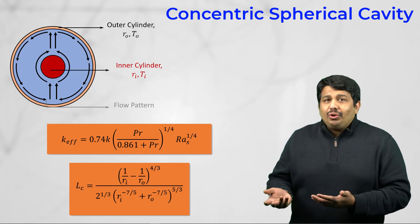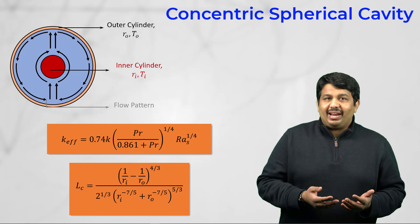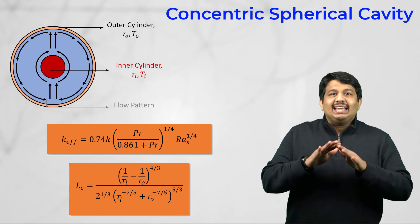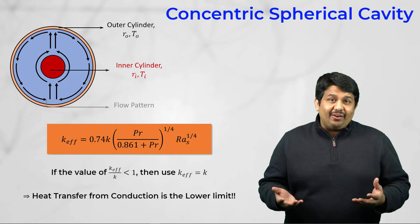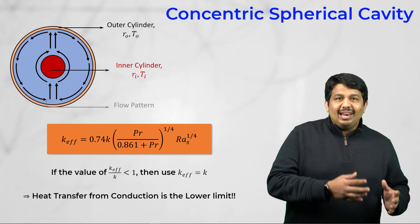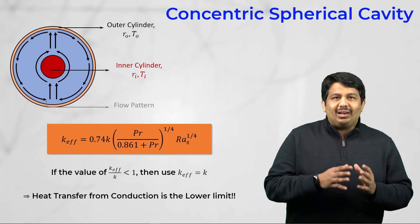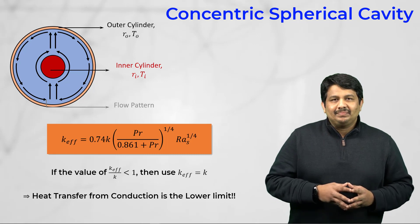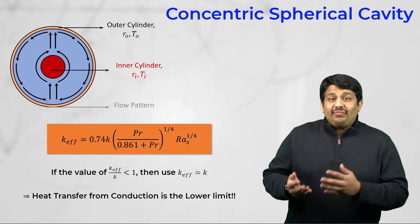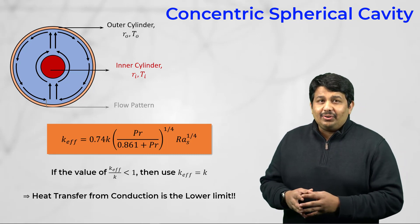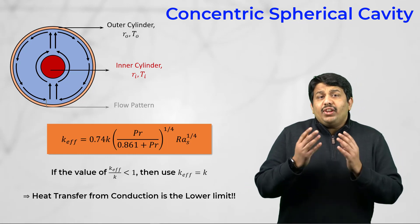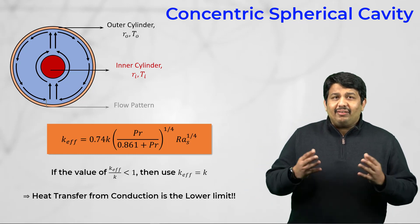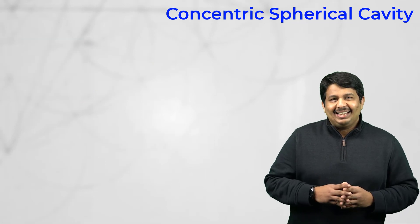We must understand that the heat transfer rate due to natural convection cannot be smaller than the conduction value; therefore, we impose a limit on the effective thermal conductivity. If the value of effective thermal conductivity is smaller than the fluid thermal conductivity, we use the fluid thermal conductivity value in the analysis. This brings us to the end of the lesson.